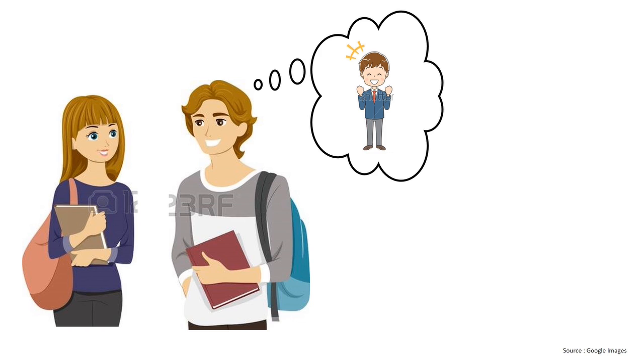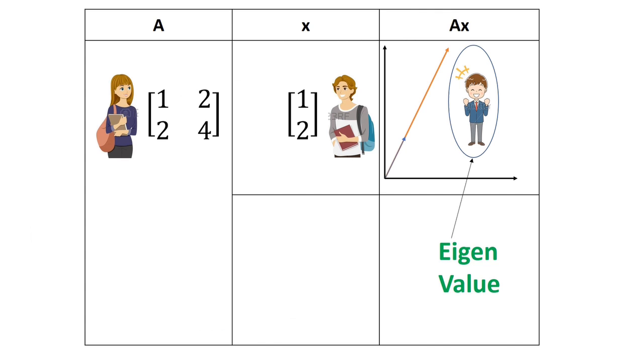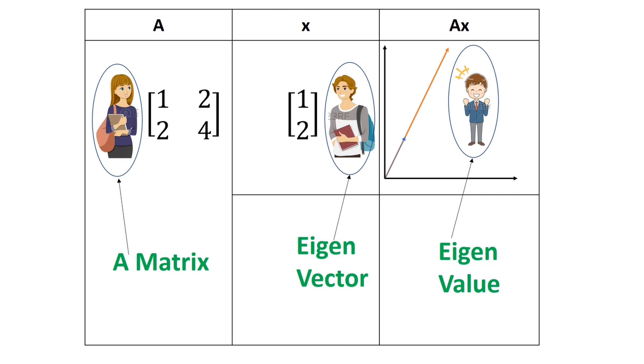Just like that. Let me repeat that once again. Your high school crush comes and talks to you and you become super excited. Now, the magnitude of that excitement is the eigenvalue. You are the eigenvector and your crush is the A matrix. End of the story.